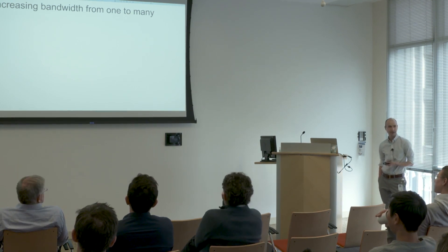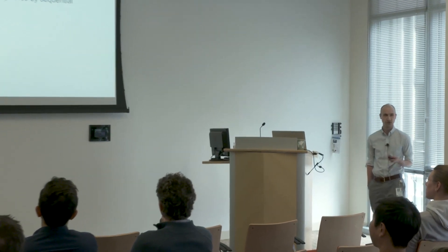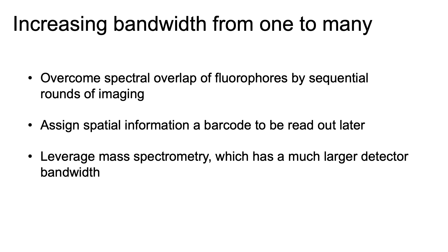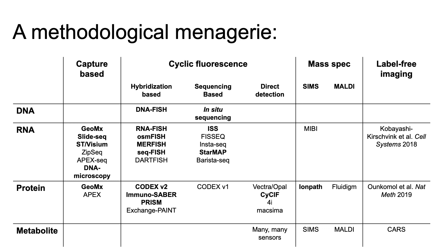The question is now, how do we increase the bandwidth from one to many? One idea is to overcome spectral crowding of fluorophores by doing sequential rounds of imaging. Another is to assign spatial information to a barcode that you can read out together in the data acquisition stage. The third common modality is to leverage mass spectrometry, which has a much larger detector bandwidth since you can detect a variety of different elements and mass-to-weight ratios. Having four different modalities versus these three ways to multiplex has resulted in a methodological menagerie.